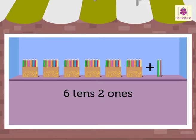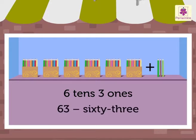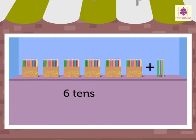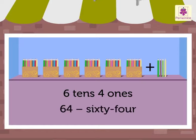Six tens and three ones is sixty-three. Six tens and four ones is sixty-four.